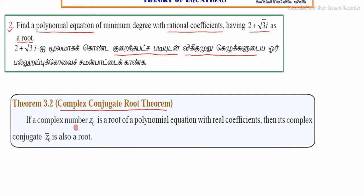If a complex number Z₀ is a root of a polynomial equation with real coefficients, let's denote Z₀ as X plus IY. If it is a root of a polynomial equation, then its complex conjugate Z₀ bar is also a root.